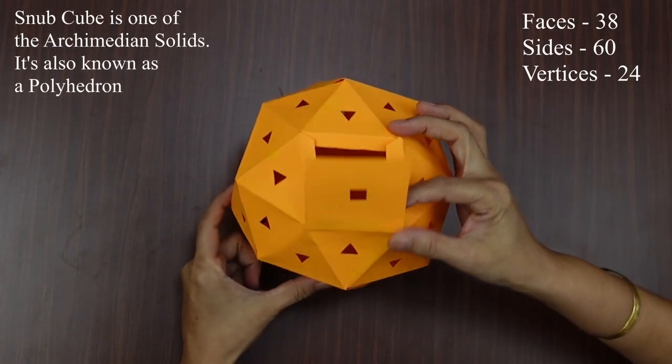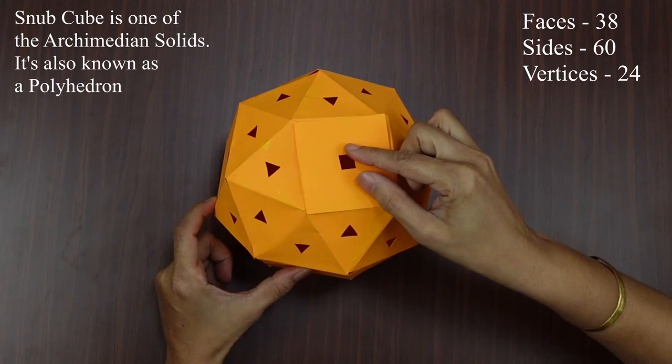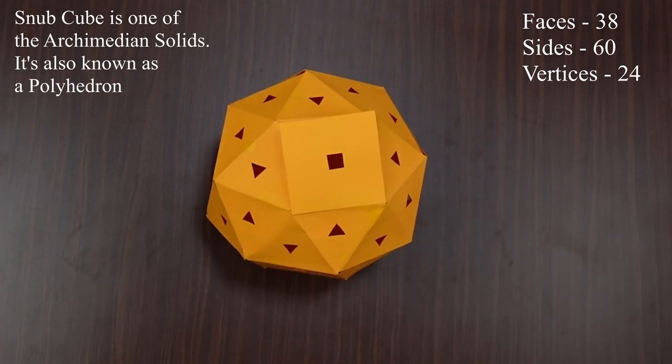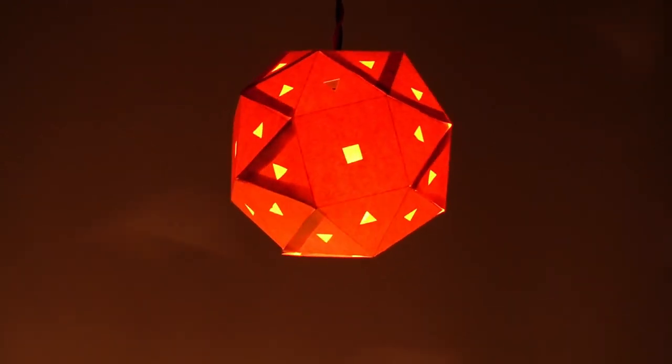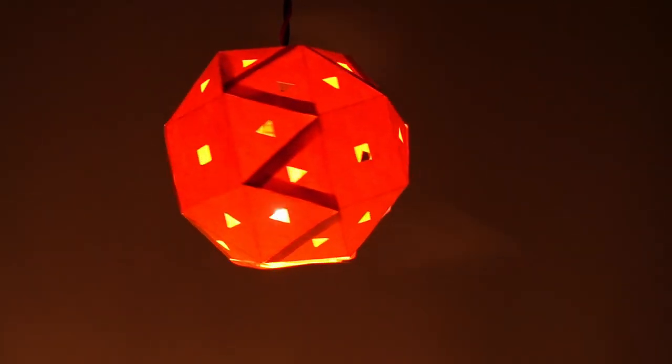This Snubcube has 38 faces, 60 sides and 24 vertices. It is polyhedron. Install the bulb in the solid and make it a skylaten.